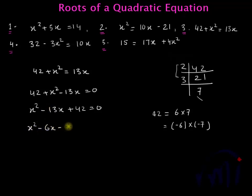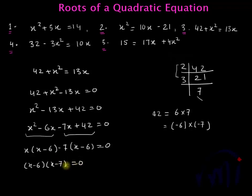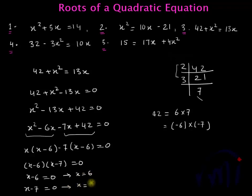So this can be written as x squared minus 6x minus 7x plus 42 equals 0. From the first group, taking x common gives x minus 6, and from the second group, taking minus 7 common again gives x minus 6. So this becomes x minus 6 multiplied by x minus 7 equals 0. Either x minus 6 equals 0 or x minus 7 equals 0, giving x equals 6 and x equals 7.